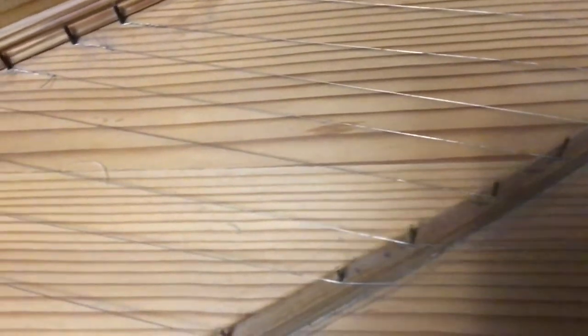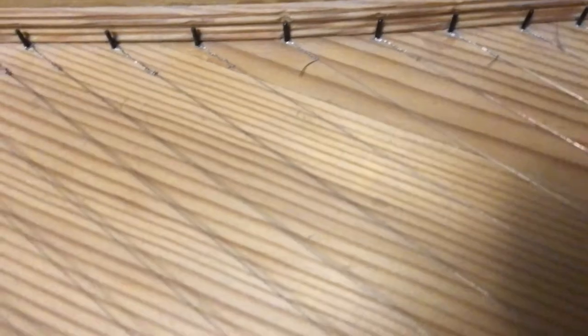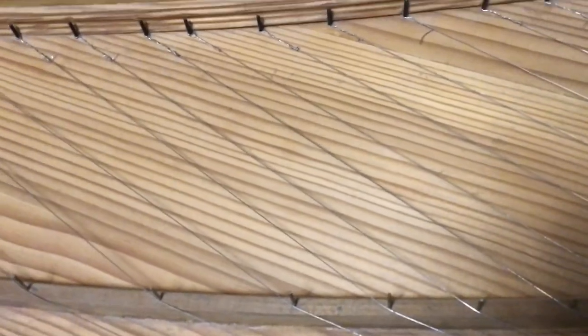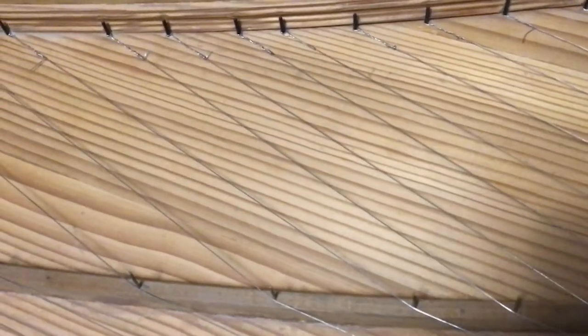The string is attached to the hitch pin down close to the soundboard where I believe it should be. The string is going over the bridge, which is sloped back towards the hitch pin, which would logically seem to keep the string down on the hitch pin, but it doesn't in all cases.